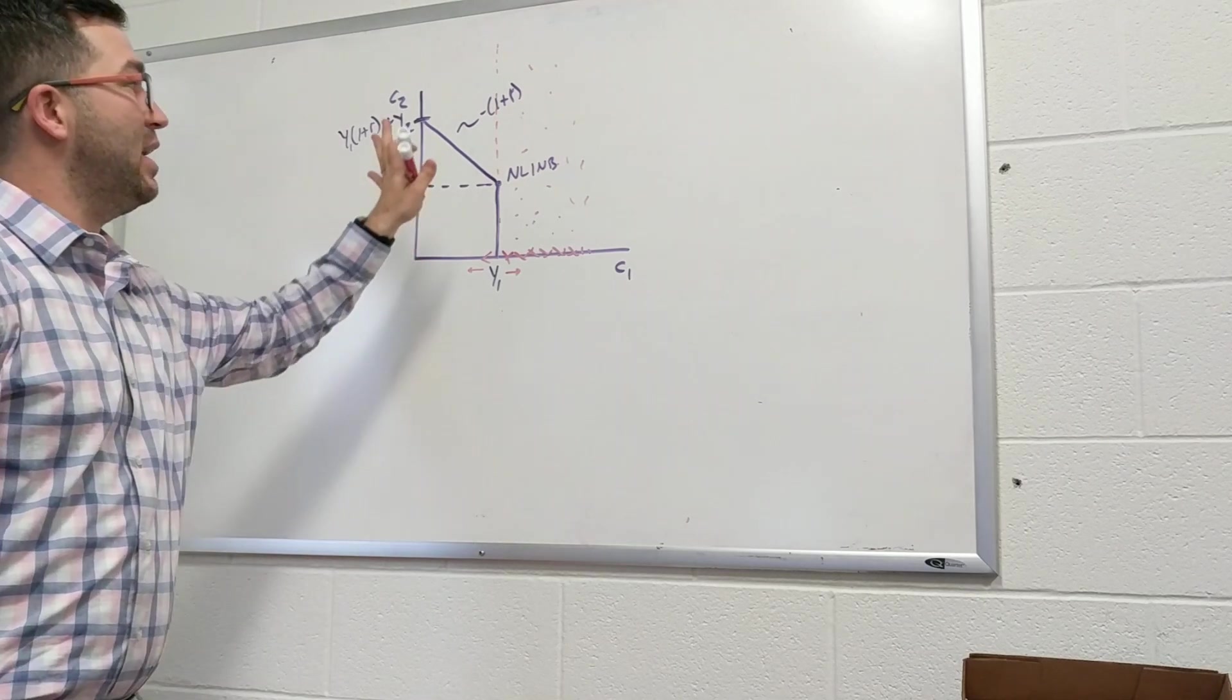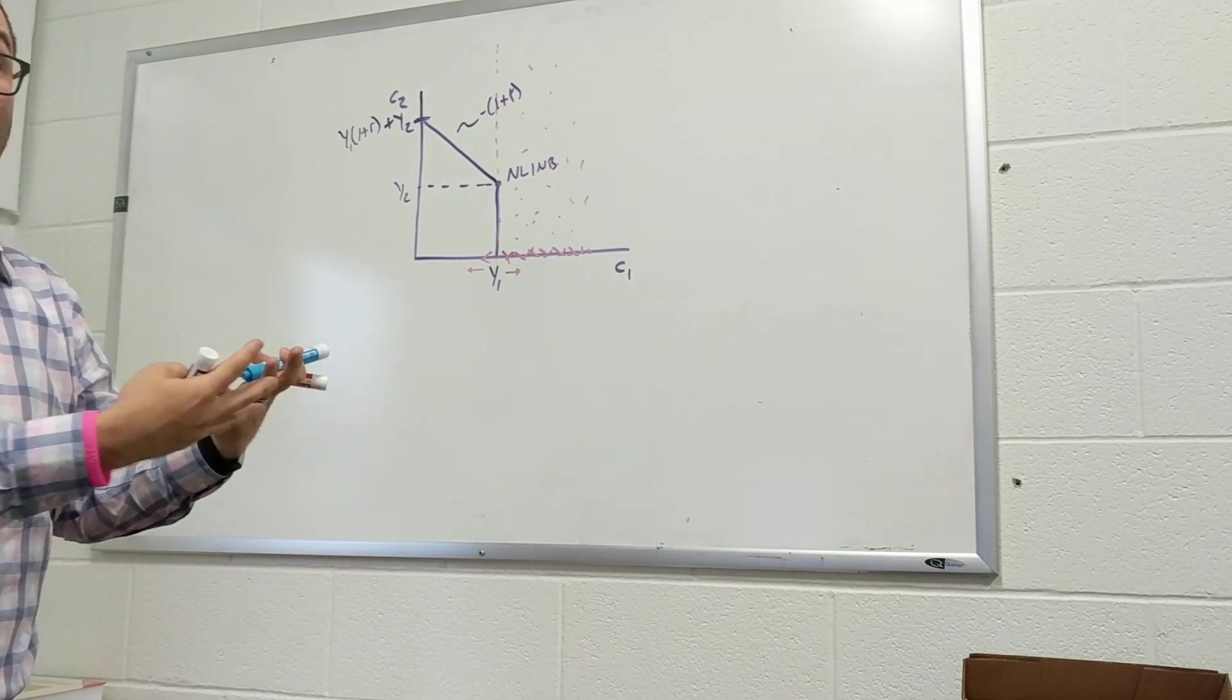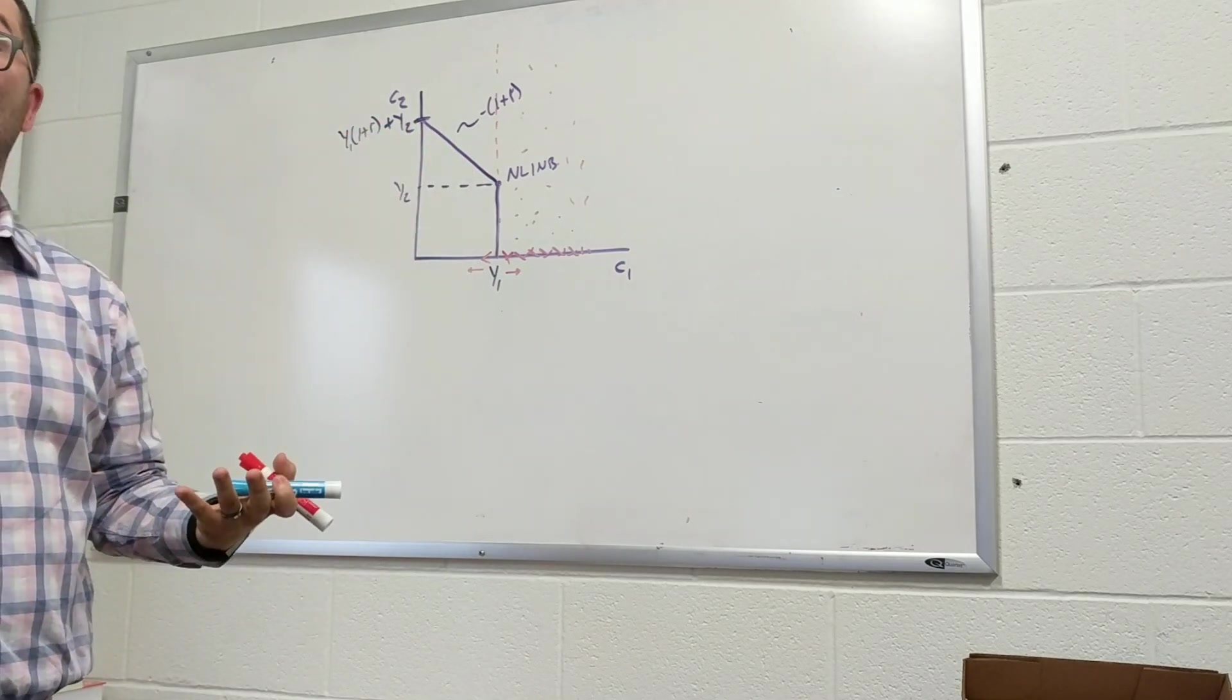Remember, one of the assumptions we're making with this intertemporal budget constraint, this model, is that we're not leaving anything over, so the consumption is going to happen along the line. There's nothing left over after you die.